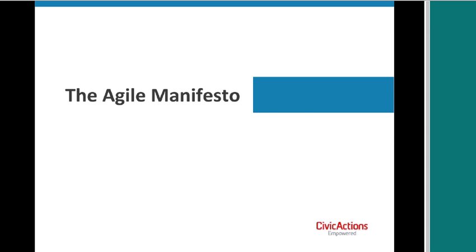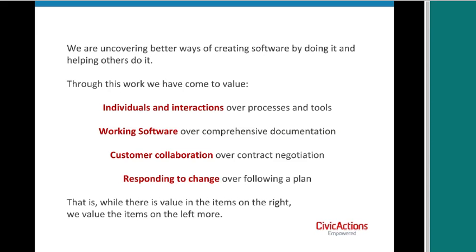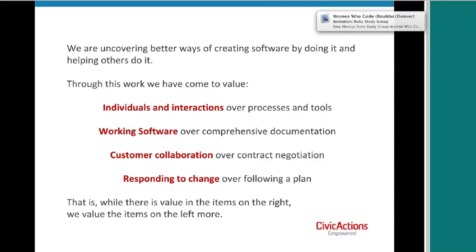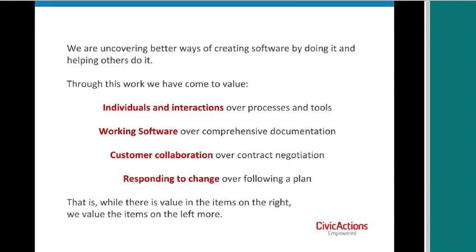This is the Agile manifesto. They drafted it in about an hour and then argued for a long time after that. The Agile manifesto says: we are uncovering better ways of creating software by doing it and helping others do it. Through this work, we have come to value: individuals and interactions over processes and tools; working software over comprehensive documentation; customer collaboration over contract negotiation; responding to change over following a plan.